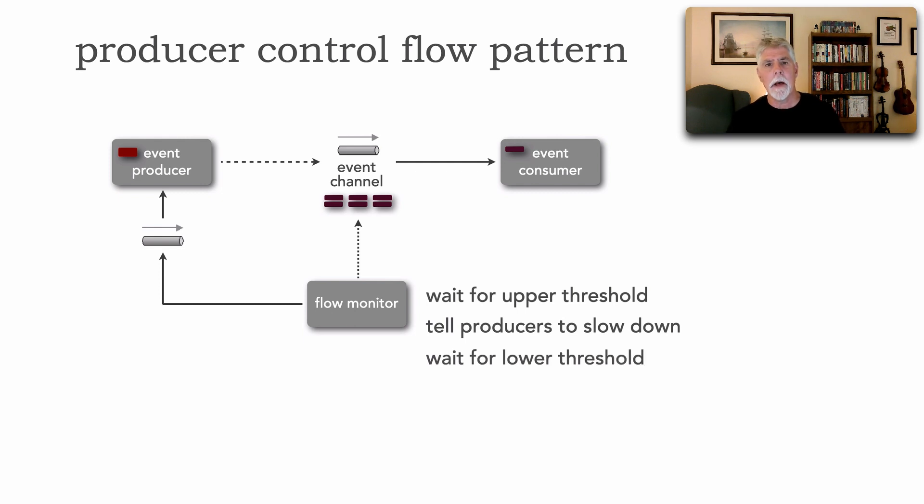Now what the flow monitor does, it still continues to monitor this event channel and it looks for some sort of lower threshold. Let's say in our example it's going to be three messages. So we continue to process messages and we hit that lower threshold of three. Now the flow monitor basically creates a new message and tells producers to now resume at your normal pace. No delay at all. And now we're back to normal. And that's how this pattern works.